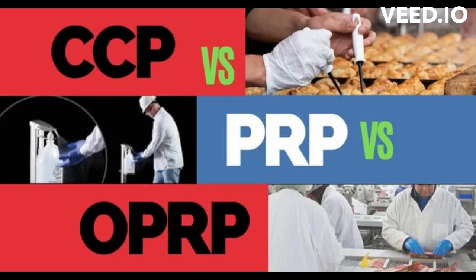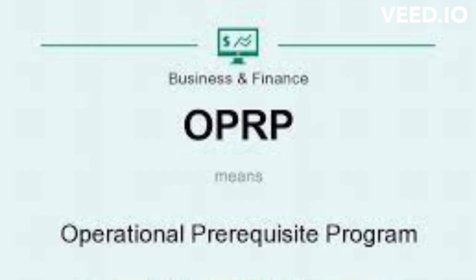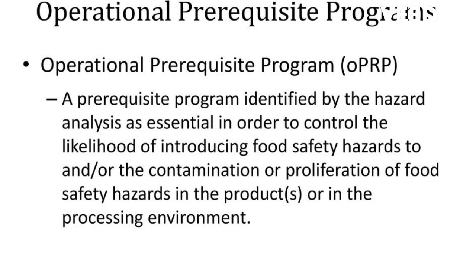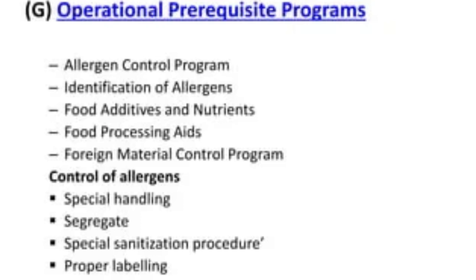Operational Prerequisite Program, OPRP. OPRPs are prerequisite programs that are put in place to control specific food safety hazards that are not considered as critical as CCPs but still require monitoring and control. OPRPs are implemented to ensure the effectiveness of the overall food safety system. They are considered important in controlling significant hazards that could impact the safety of the final product.